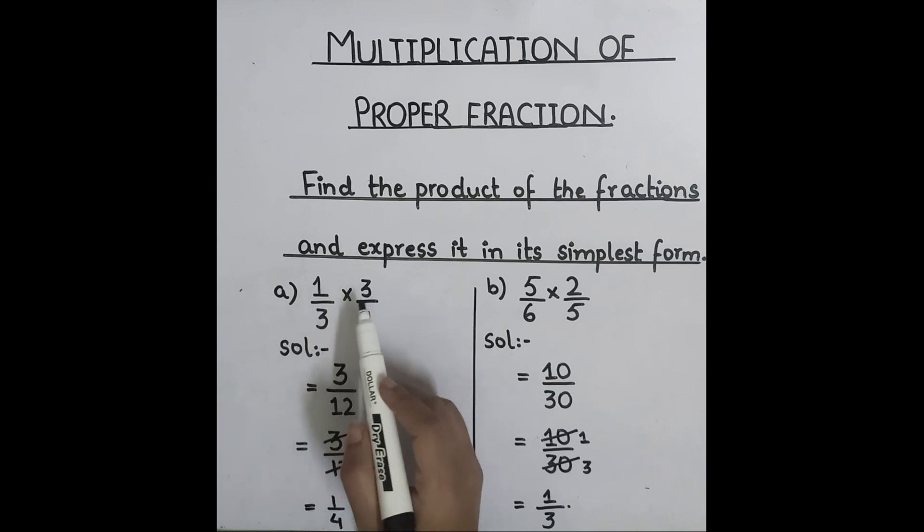So, one into three is three and three into four is twelve. Three over twelve is a fraction which is not in its simplest form. Three one times three, three four times twelve.